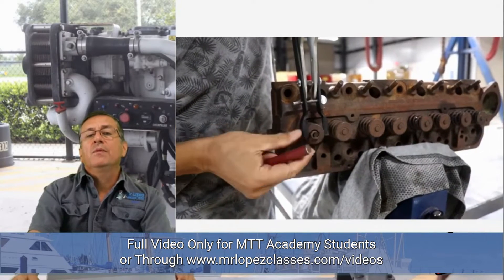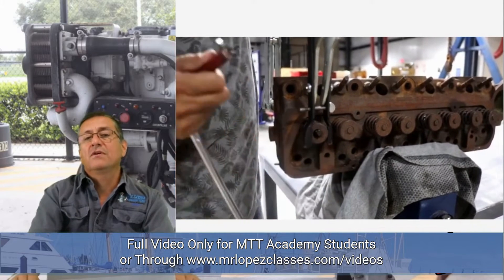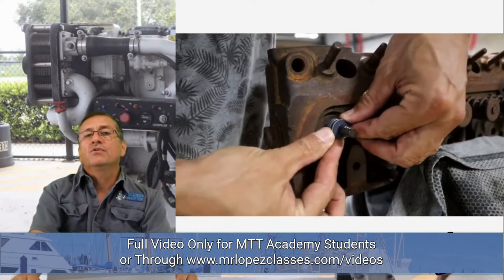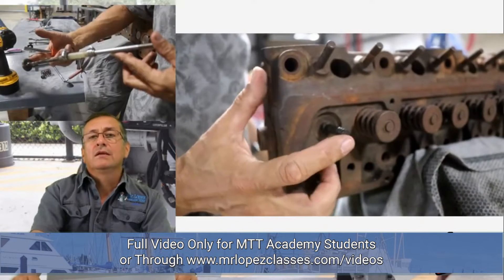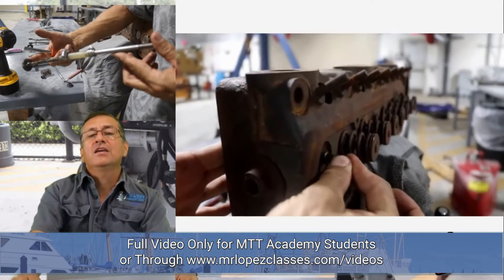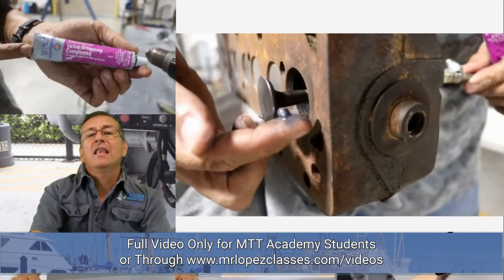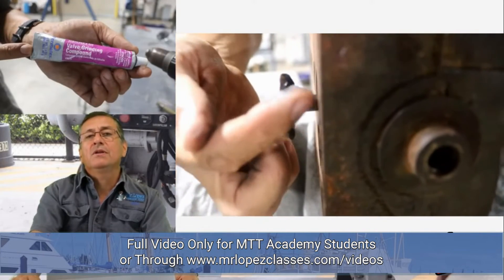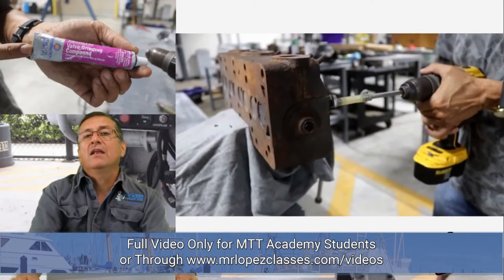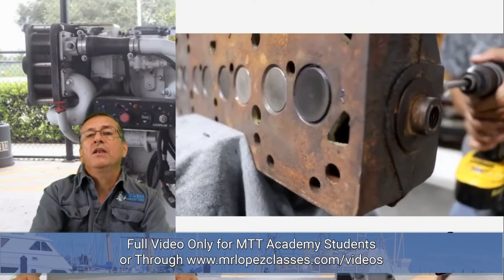What is the lapping procedure? The lapping procedure consists of seating the valve appropriately against the valve seat to produce a good seal. To do the lapping procedure, I recommend preparing a drill with a hose and an adapter in order to move the valve at high speed against the face of the head. Apply lapping compound — which is sandpaper in cream form — to the face of the valve, and with the drill, work it back and forth for four to five minutes.